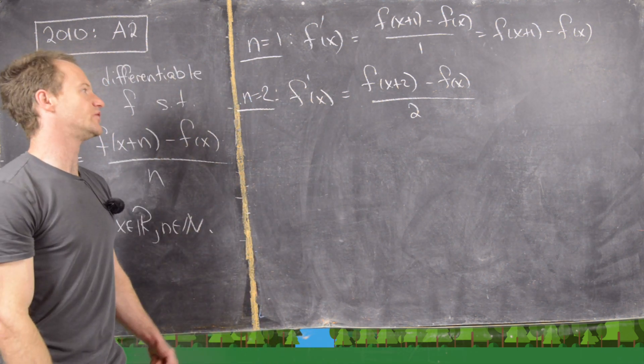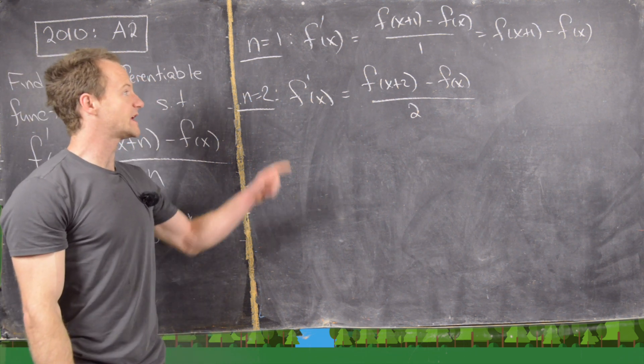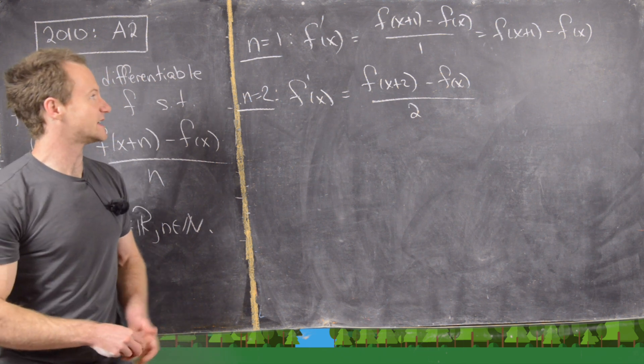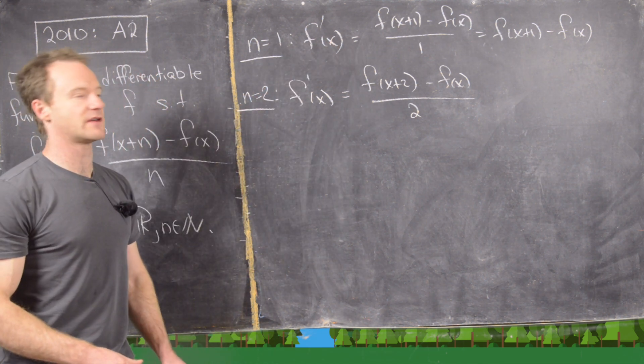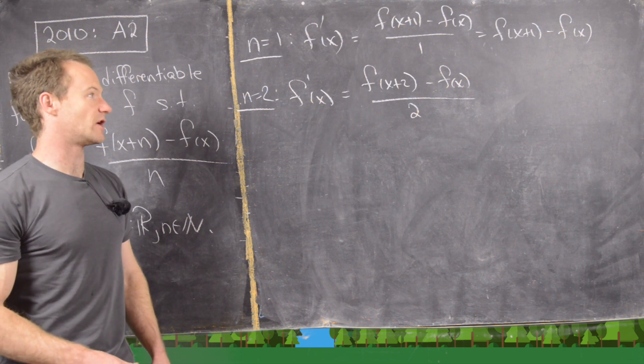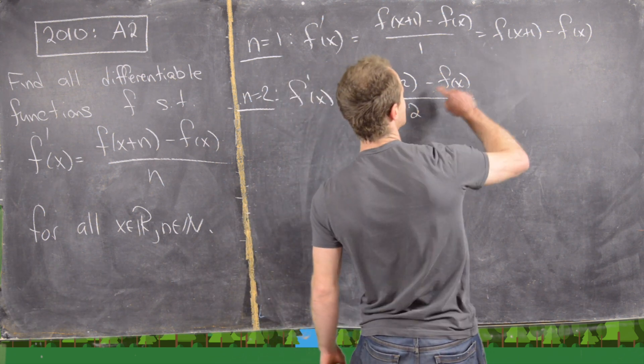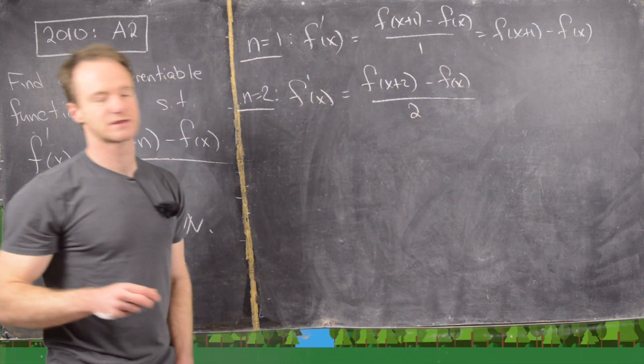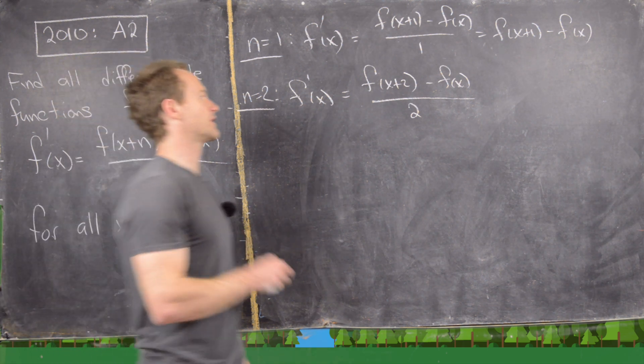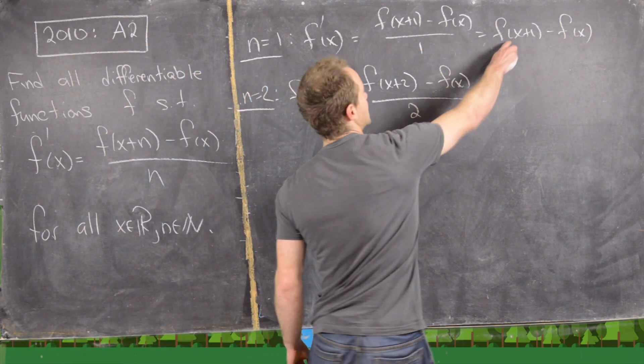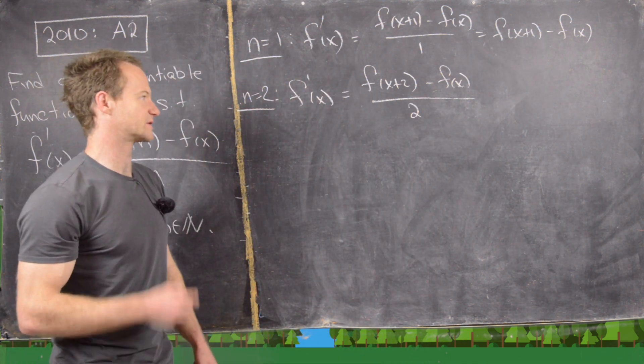It's really easy to continue to write down a bunch, but we won't really gain anything from that. What we can notice is that maybe it's interesting to fuse these two equations together. Maybe that will give us enough information to solve this problem. So we want to look, how could we get something involving f(x+1) in here? We can do that by adding 0, and the version of 0 that we're going to add will be negative f(x+1) and positive f(x+1).